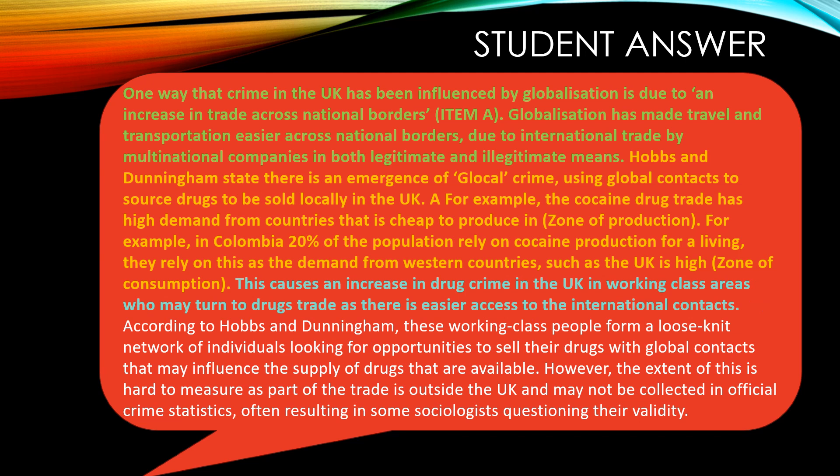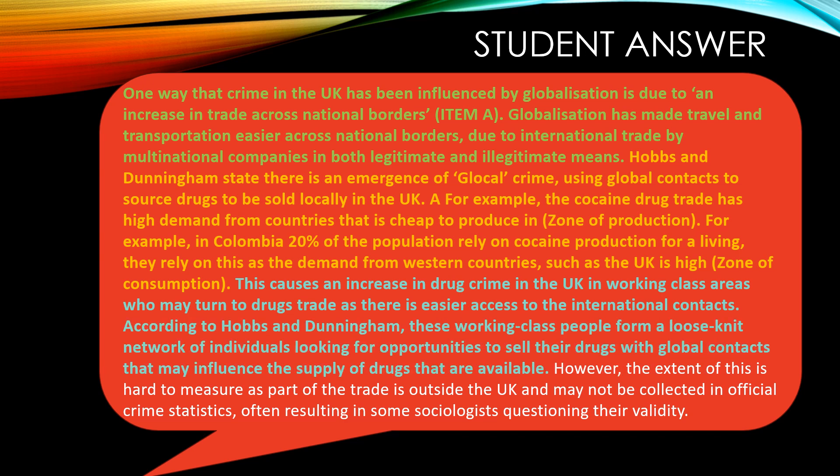The student uses the wording from the question: 'this causes an increase in crime in the UK' — in this case, drug crime — and notes these tend to occur in more working-class areas with easier access to international contacts. They explain how working-class people are forming loose networks, looking for opportunities to sell drugs with global contacts, which influences the supply available. This can also link to Winlow's study of bouncers using their opportunities and bodily capital to commit crimes, with a connection back to the global network.